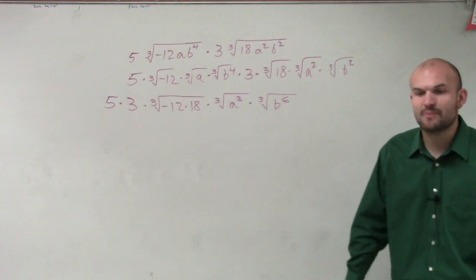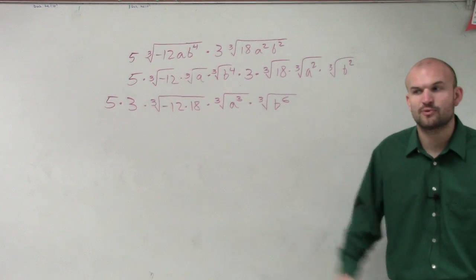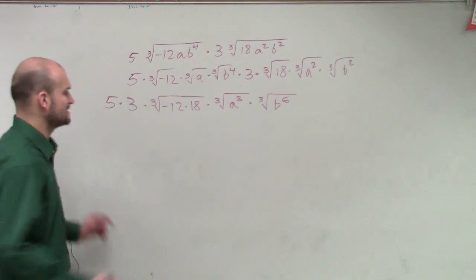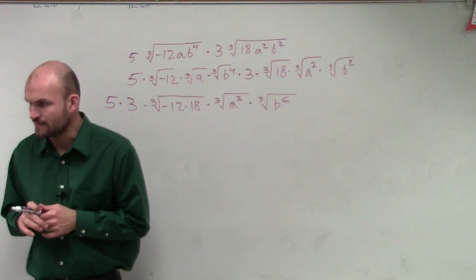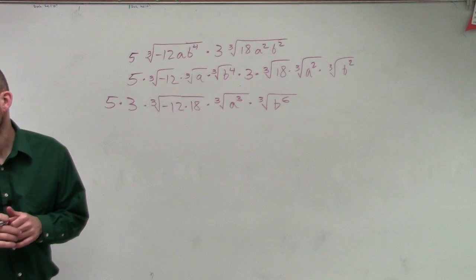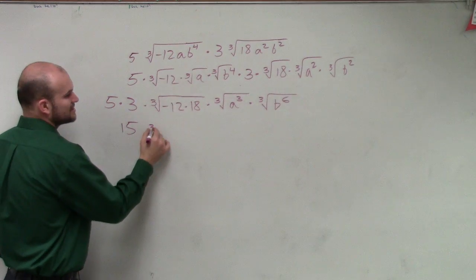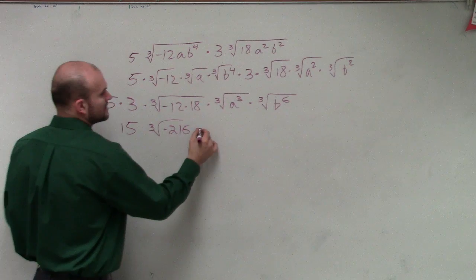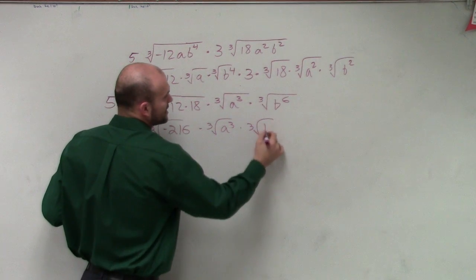Then does it now look like I might be able to simplify this a little bit further? Yeah, of course, right? Now it's in a way that I can do. So I'm going to do 12 times 18 for me. I don't know what that value is. And then take the cube. Negative 216. So the cube root of that, I should know it. Negative 6. OK. So we have 15. This is the cube root of negative 216 times the cube root of a cubed times the cube root of b to the 6.